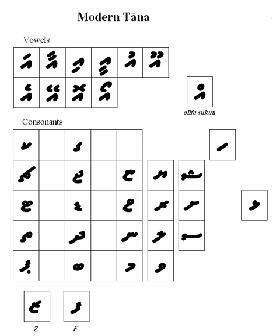Gemination of nasals, however, is indicated by Nunu plus sukun preceding the nasal to be geminated. The origins of Tanna are unique among the world's alphabets. The first nine letters are derived from the Arabic numerals, whereas the next nine were the local Indic numerals.